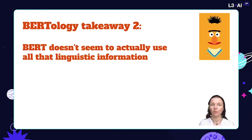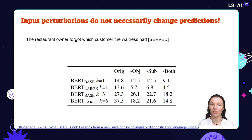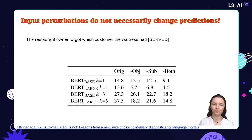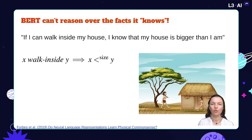However, takeaway number two is that we don't know that BERT actually uses all the information it seems to know. For example, in the sentence "the restaurant owner forgot which customer the waitress had served," the task for the language model is to fill in the gap for "served," requiring it to understand the roles of the customer and the waitress. As shown in this table, if you remove the word "customer" or "waitress" or even both, model performance does not necessarily degrade as much as human performance would.